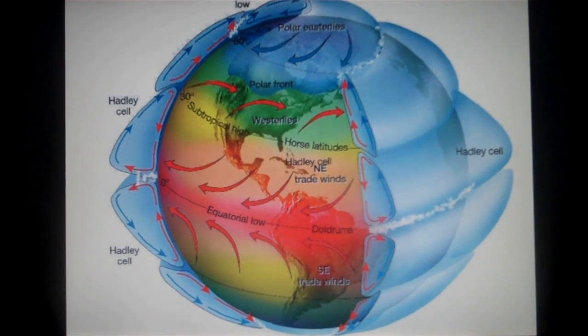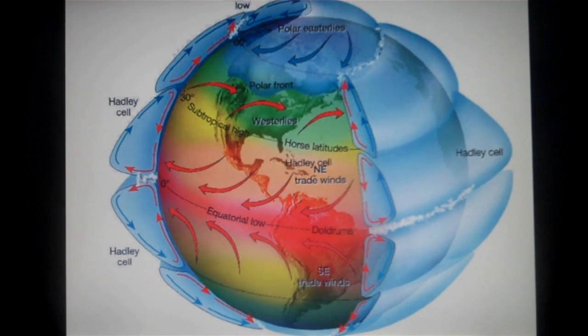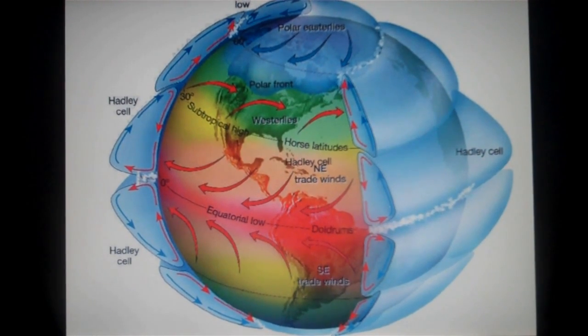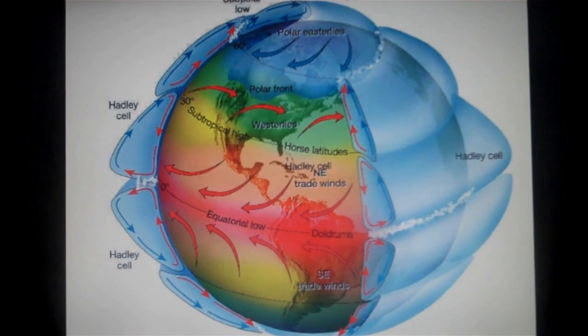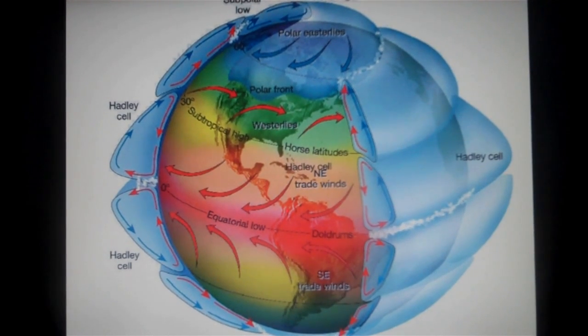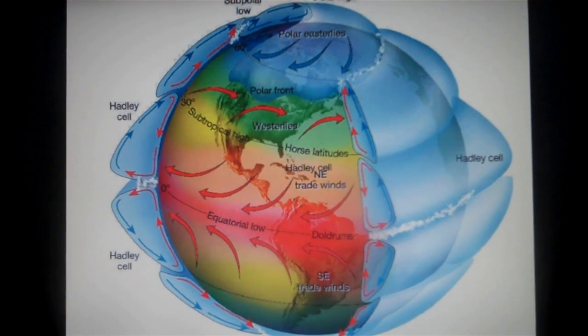The air heading towards the poles creates the surface winds within the Ferrell cell which travel from the west, which once again is due to the Coriolis force. These winds move towards the poles from 30 degrees latitude and then rise at 60 degrees latitude.